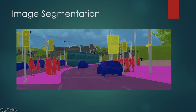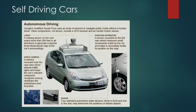Then we have image segmentation, in which we divide this image into different classes. The cars are classified separately, humans are classified separately, the train is another class, and the sky, traffic signals, the road, the footpath are all classified separately. This way you can easily segregate objects and detect what kind of object is needed. Then we have autonomous driving vehicles — Google uses this technology by installing a camera on top of the car, which sends images to detect objects and make driving decisions. It's a combination of computer vision, artificial intelligence, machine learning, and robotics.